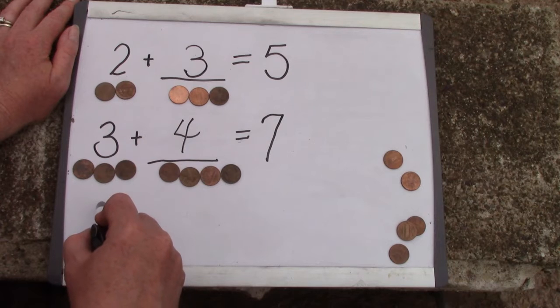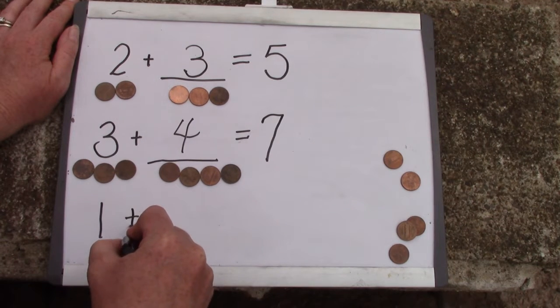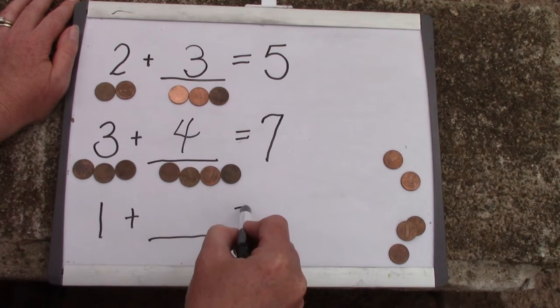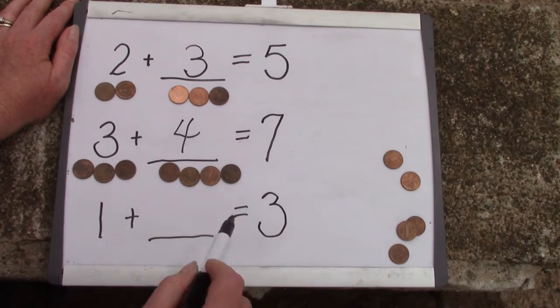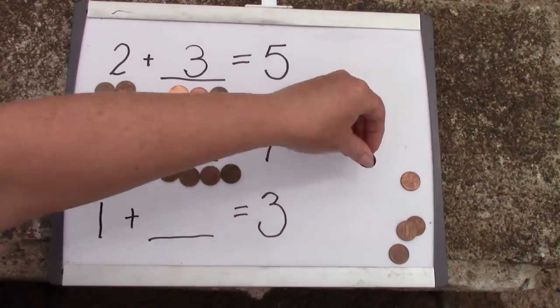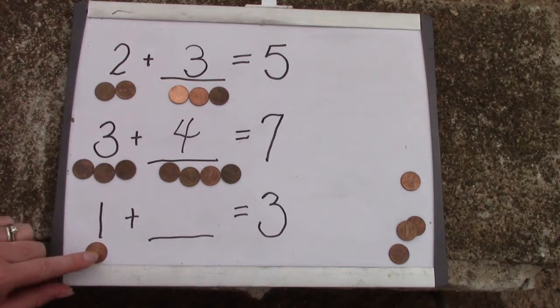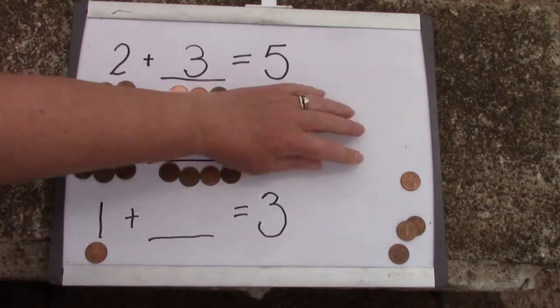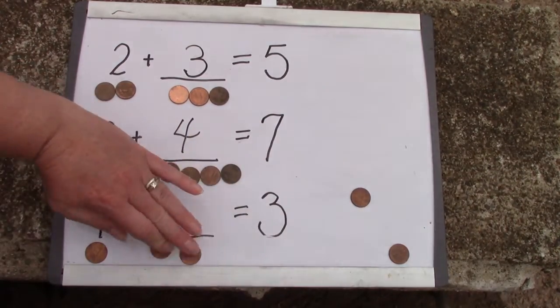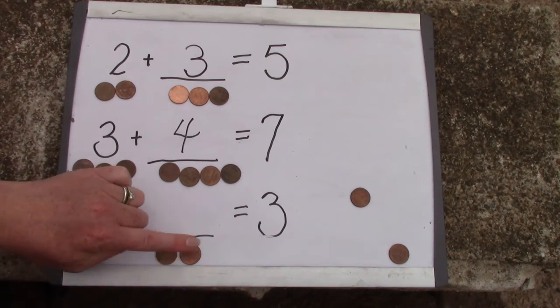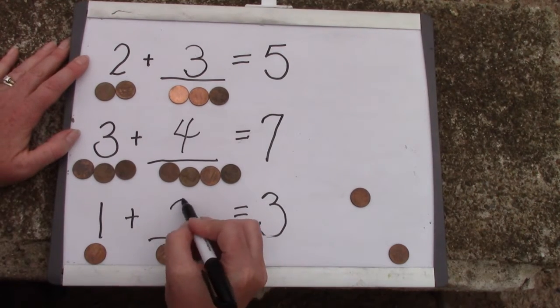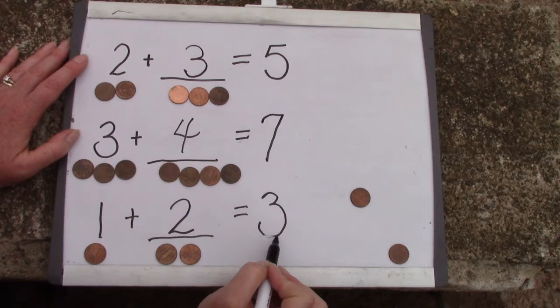What if I have one out of the three that I need? Well, that one's easy. If I have one but I need three, how many more pennies am I going to need? One, two, three. One plus two equals three.